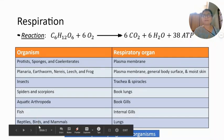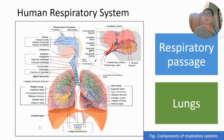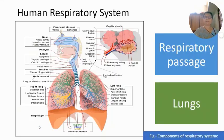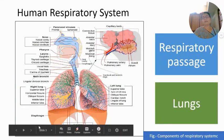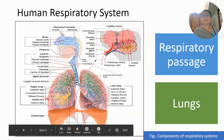Reptiles, birds, and mammals use lungs as the respiratory organ. In the case of a turtle, a special type of respiratory organ called the cloaca is used. So different animals use different types of respiratory organs. In humans, the special respiratory organs are the paired lungs, and the respiratory system in man is known as pulmonary respiration.